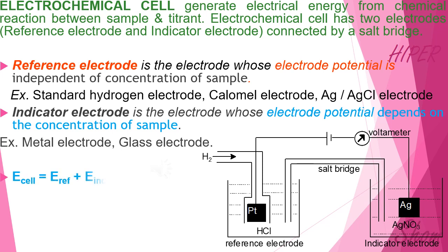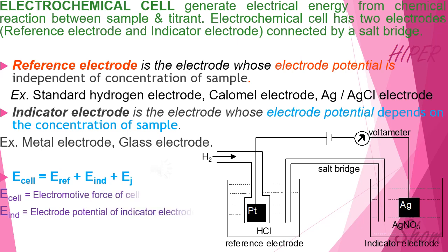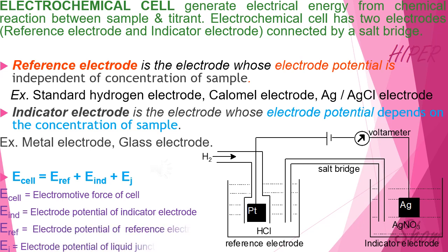The electromotive force of the electrochemical cell is equal to the electrode potential of the reference electrode, plus the electrode potential of the indicator electrode, plus the electrode potential of the liquid junction. The liquid junction is actually the electrode potential of the salt bridge that connects the reference electrode and the indicator electrode.